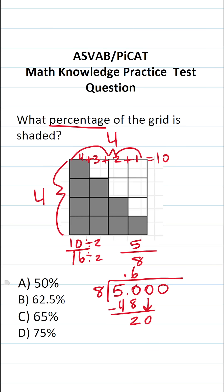Drop down this 0. How many times does 8 go into 20 without going over? It's going to be 2 times. 8 times 2 is 16. Our 20 minus 16 is 4. Drop down this 0. How many times does 8 go into 40 without going over? 8 times 5 is exactly 40 with no remainder.